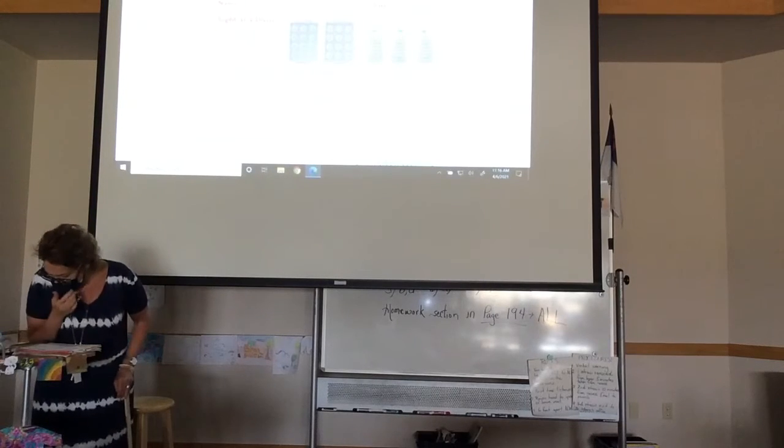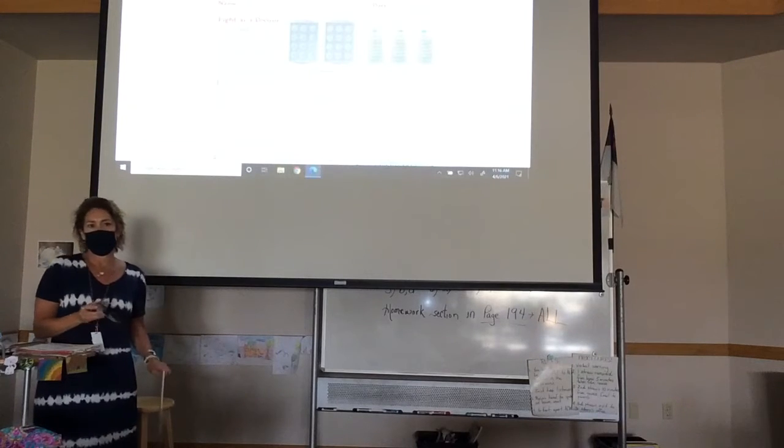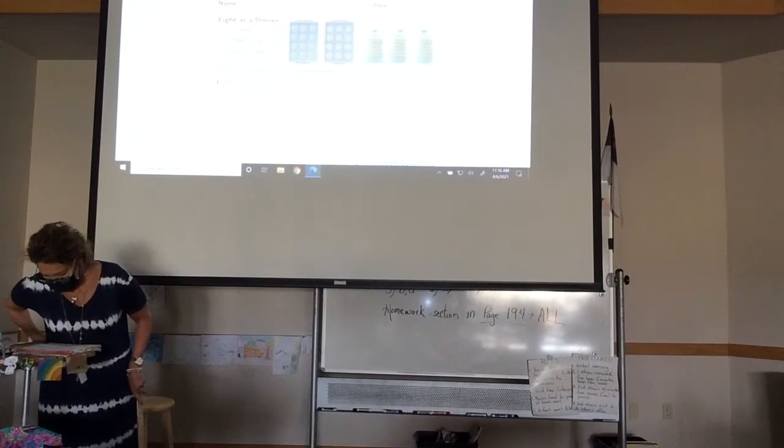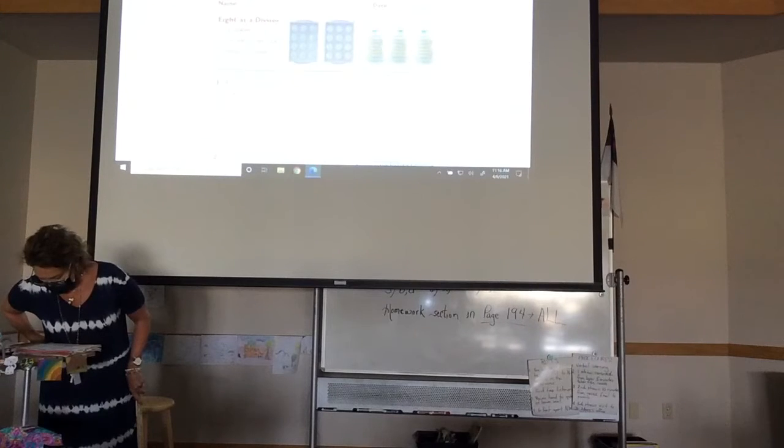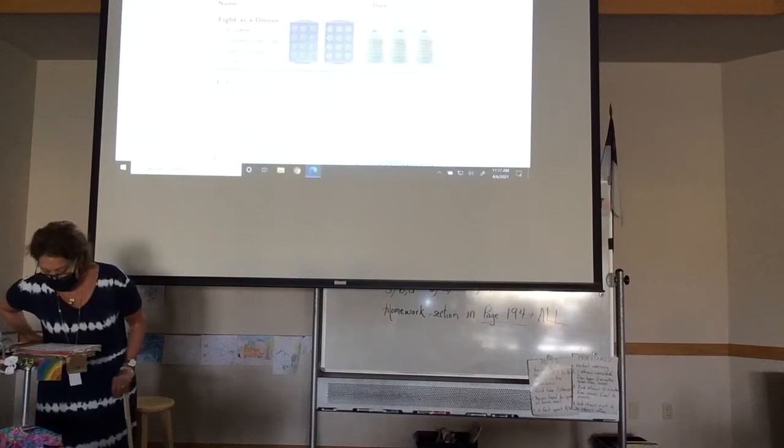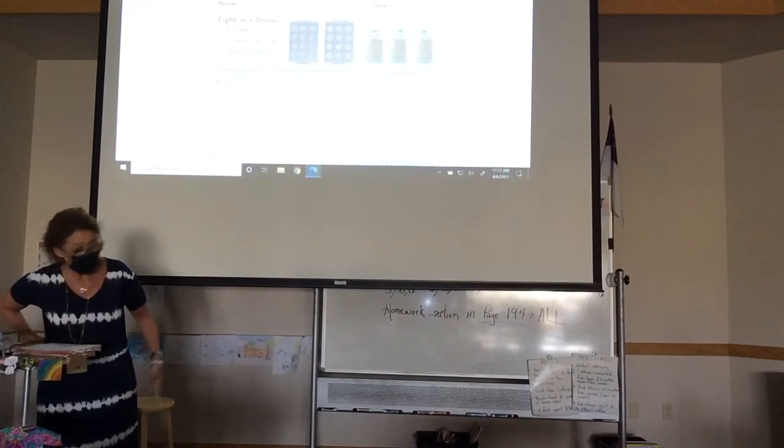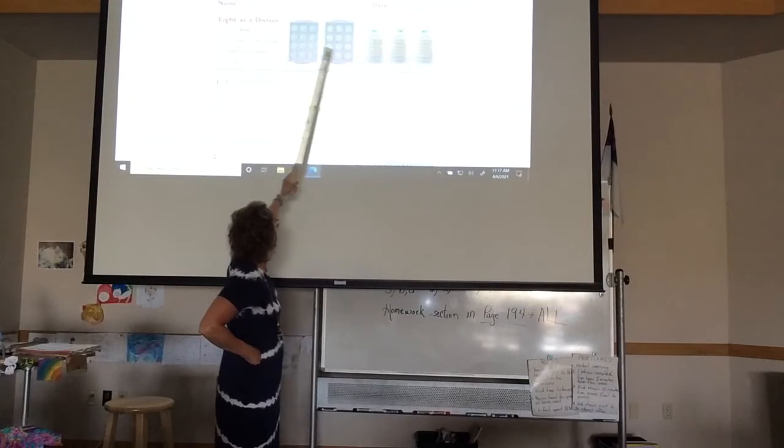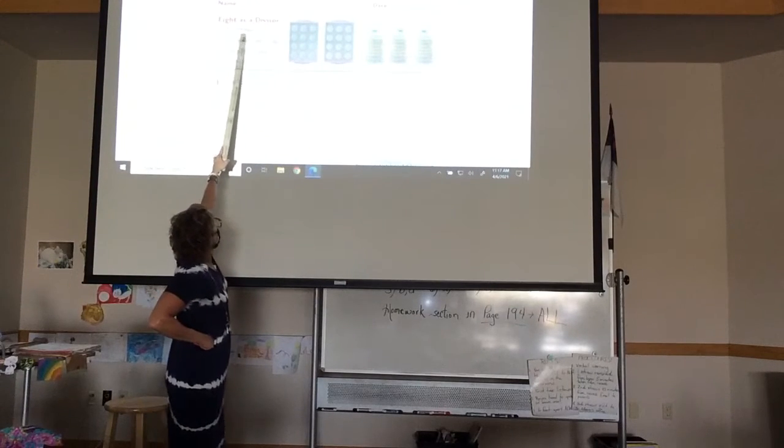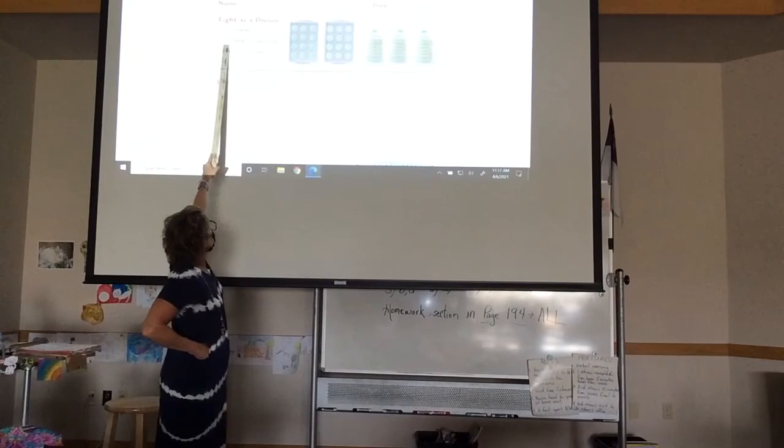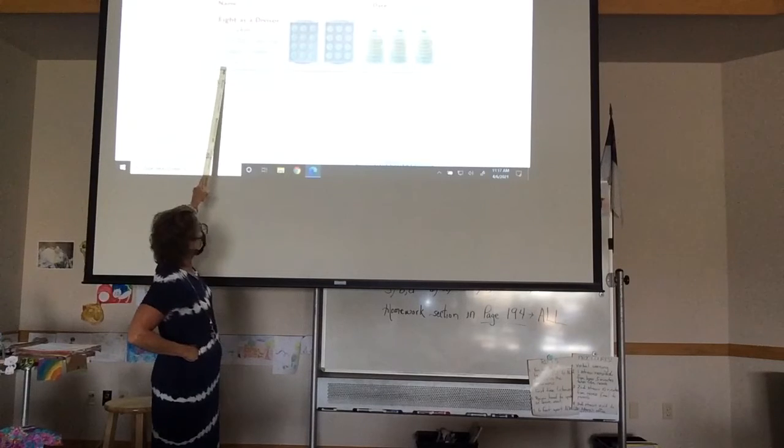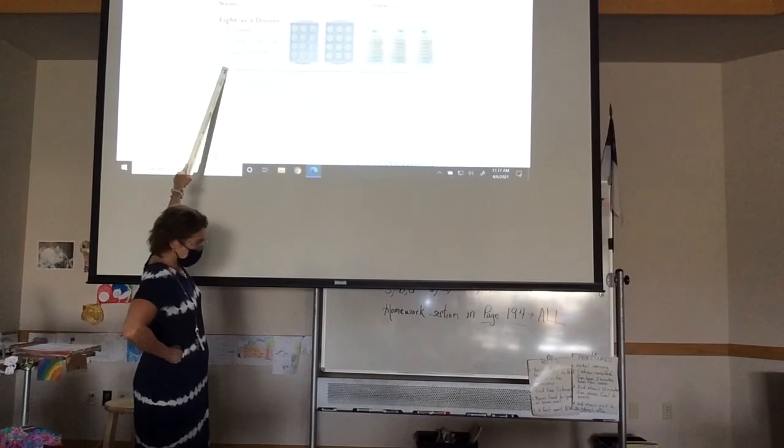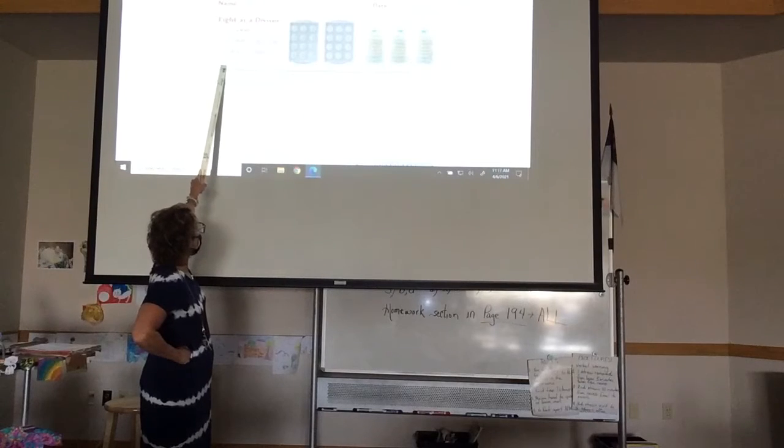All right, so 8 as a divisor. Remind me again what the divisor is. What is a divisor? A number in a division problem. Right, so we're dividing 24 cookies, 8 cookies in each bag, 3 bags of cookies. They look like sugar cookies. So 24 cookies, dividing it by the 8, which is the divisor.